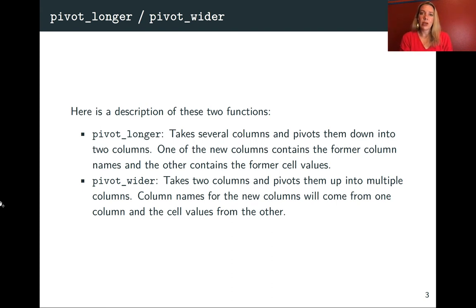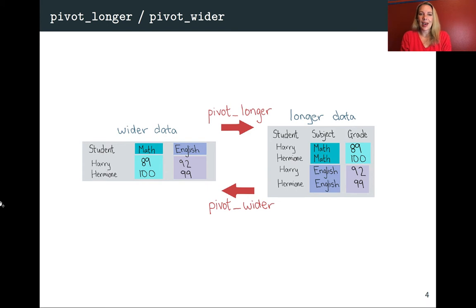The second is pivot_wider. In that case, you might have your data that's narrow, but you have two different variables kind of alternating back and forth inside. So we saw an example in the very first lecture with minimum temperature and maximum temperature. So in that case, there actually were two separate variables, and we want to have separate columns for those. So we're taking data and shifting it out, pivoting it out to have two columns from values that were listed before.